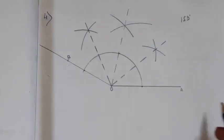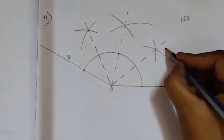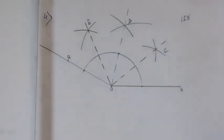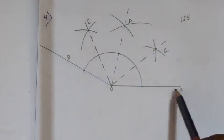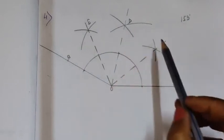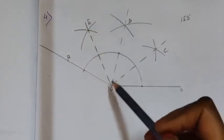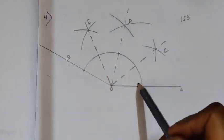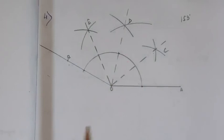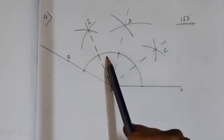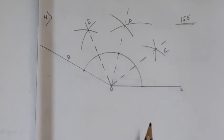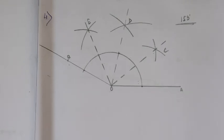Let us name all the points C, D, and E. We have got four angles: angle AOC, angle COD, angle DOE, and angle EOB. All four angles are equal, so we have divided the angle 153 degrees into 4 equal parts. This is how we do question number four. Students, I am stopping here and the rest of the sums will continue in the next video. Thank you, Namaste.